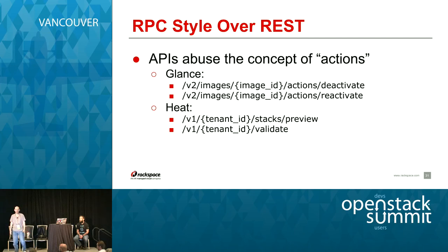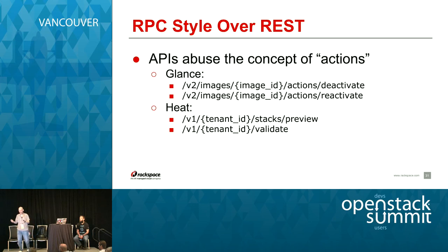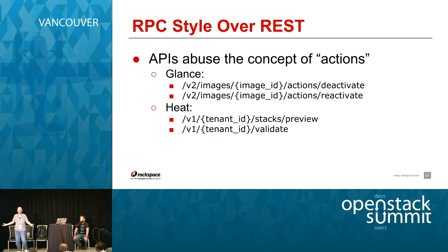Another thing that gives me sleepless nights is this 'actions' concept so common in many APIs. The REST architecture says everything is resource-based — the actions are part of the REST structure: create, read, update, and delete. The URLs should represent resources. But some APIs abuse that and start putting actions in URLs. These are more things you have to hard-code. Some are really bad — the Heat example with 'validate' — if you can tell me what it's validating, I have no idea. You have to go read the code or documentation.